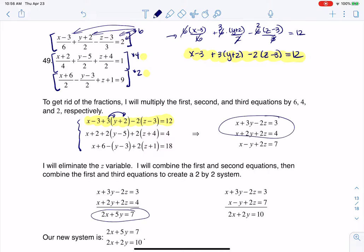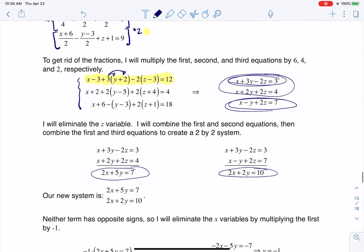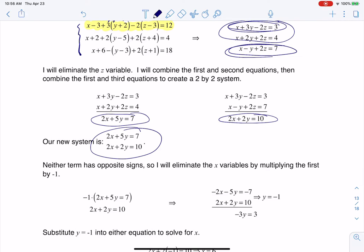And that gets me to 2x plus 5y equaling 7, and then I'm going to add the first and third equation because they also have opposite z signs, and that gets me to 2x plus 2y equaling 10. And then it's not looking too bad. There's my new system.